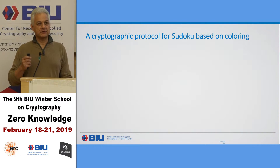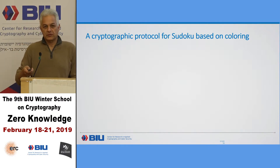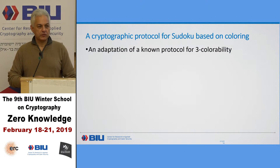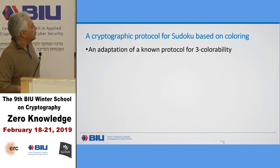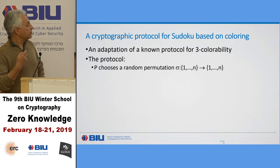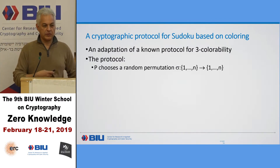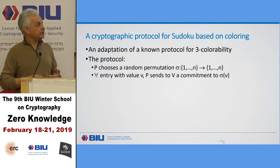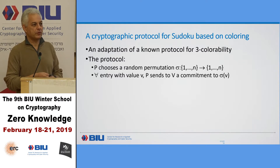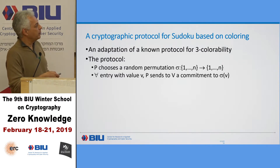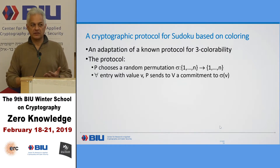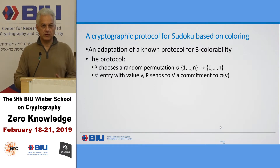The first idea that comes to mind is a translation of a cryptographic protocol — specifically a protocol for three-colorability — to solving Sudoku between people. The prover, who knows the solution, chooses a random permutation from the numbers 1 to N to 1 to N. Then in each entry on the board, the prover puts a commitment to the permuted value of that entry. If an entry had value 2 and the permutation maps 2 to 5, he puts a commitment to 5. I assume most of you know what commitments are.